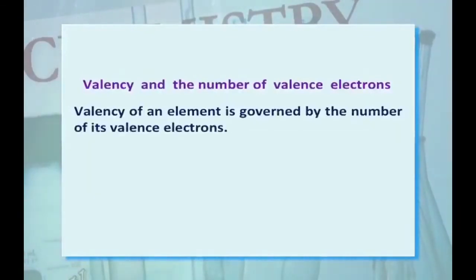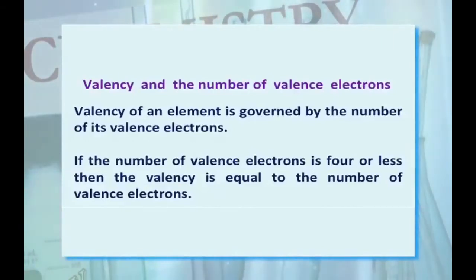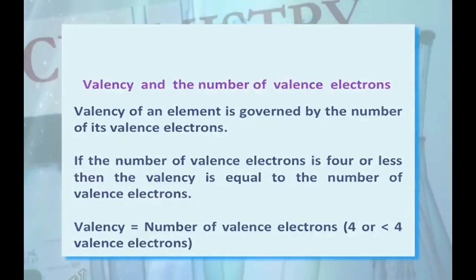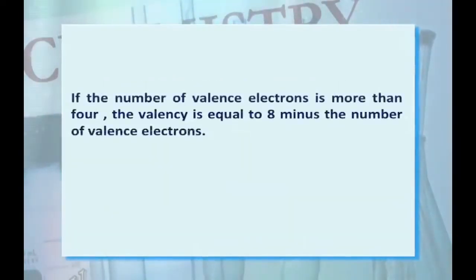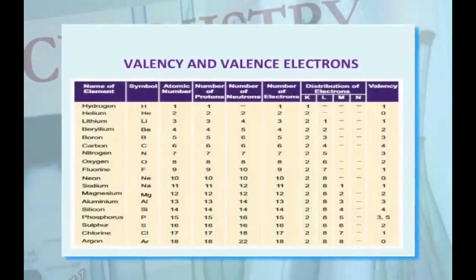Valency and the number of valence electrons are two important terms. Valency of an element is governed by its number of valence electrons. If the number of valence electrons is 4 or less, then valency equals the number of valence electrons. If the number of valence electrons is more than 4, then valency equals 8 minus the number of valence electrons. A table shows different elements, their symbols, atomic numbers, valence shell electrons, and distribution of electrons in different shells.